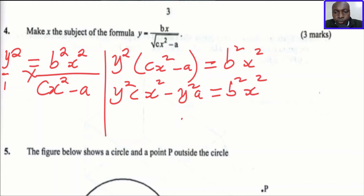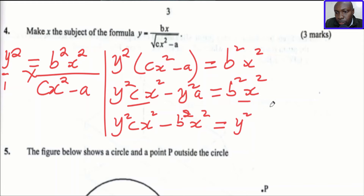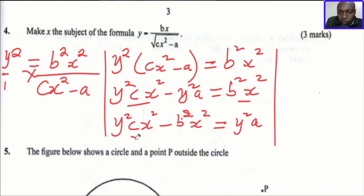Since we're making x the subject, we group the like terms. We can see we have x on both sides, so we bring them together: y squared cx squared, then bringing the b squared x squared to this side gives us y squared cx squared minus b squared x squared, then we take y squared a to the right hand side.